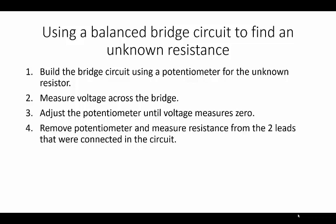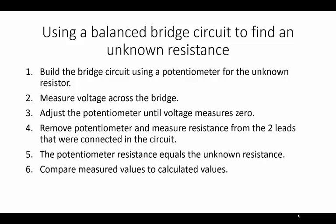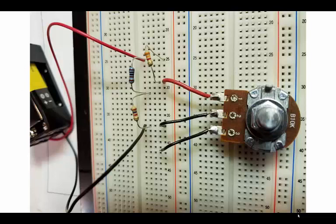And that's the value of the unknown resistance. Now, it's always good to compare your measured values to calculated values just to double-check to make sure you're not making any mistakes. So here's a picture of a Wheatstone bridge that could be used to find an unknown resistance. I've put a 10K potentiometer in the circuit, and I'll show how to measure that to determine the unknown resistance value.